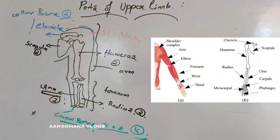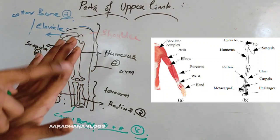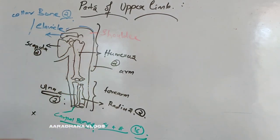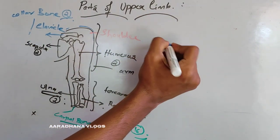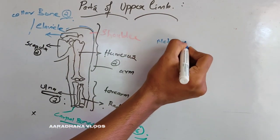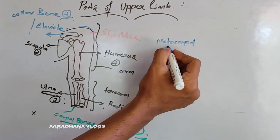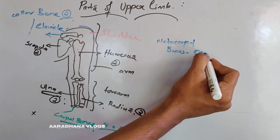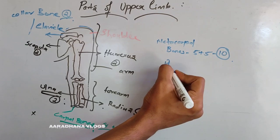Next are the metacarpal bones. As you can see, there are five metacarpals — first, second, third, fourth, and fifth. So totally five metacarpal bones are there on each hand. Five on the right side and five on the left side, making a total of ten metacarpal bones.